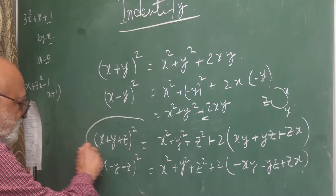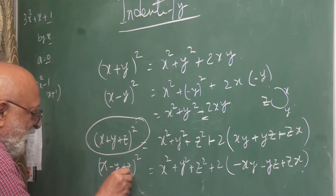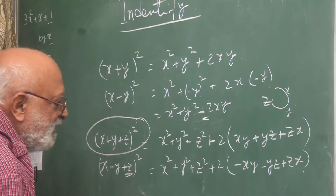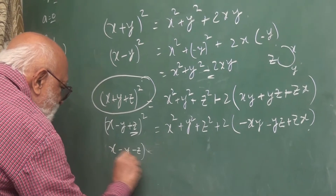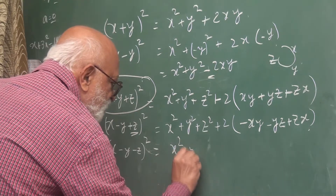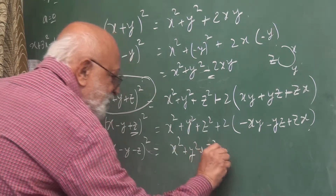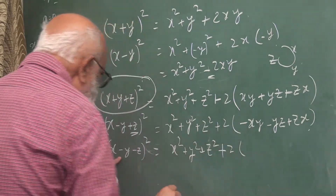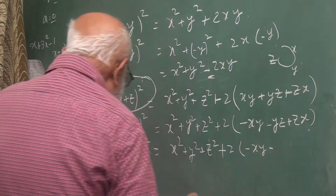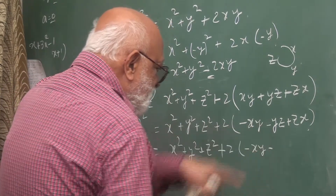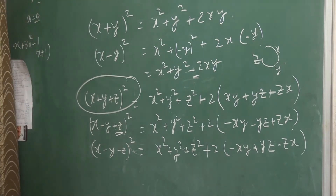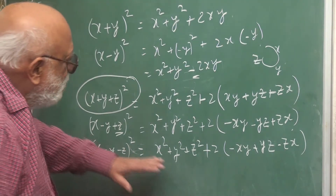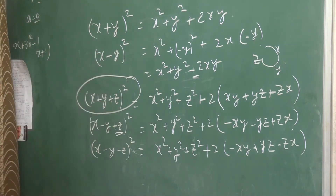Similarly you can have z as minus. Suppose you have x minus y minus z squared — wherever you have positive z, put negative z — so plus 2 into: minus xy is there, then minus z and y gives minus yz, and minus zx. Take care of the negative signs. You just remember one variation and derive all the others from it.